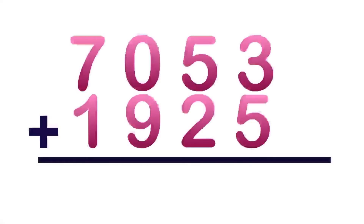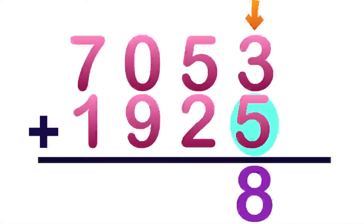How about if we have 7,053 plus 1,925? Again, we are going to start at the 1's place. 3 plus 5 — 5 on your mind: 5, 6, 7, 8. So, 3 plus 5 is equal to 8. Let's proceed to the 10's place. 5 plus 2 — 5 on your mind: 5, 6, 7. So, 5 plus 2 is equal to 7.